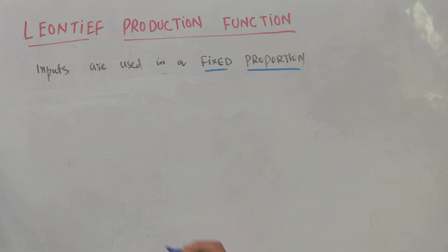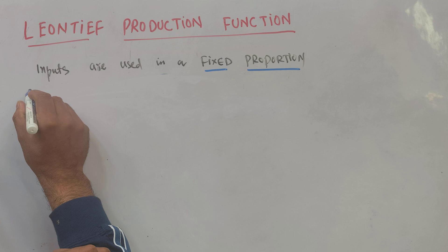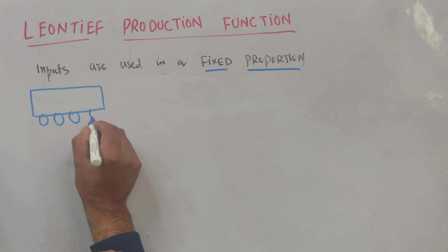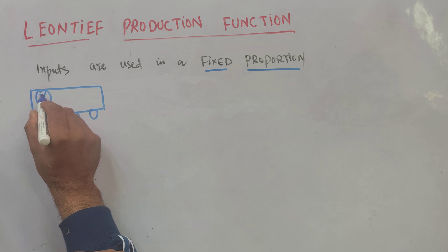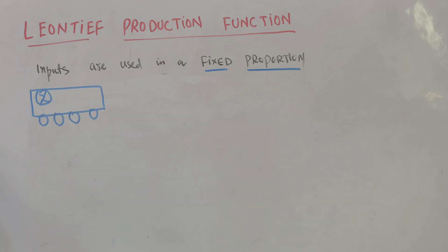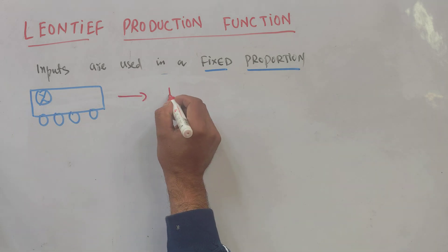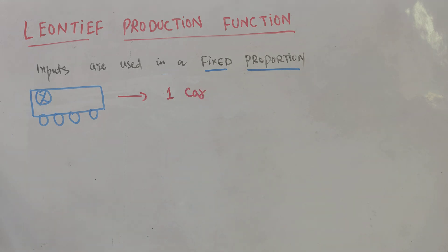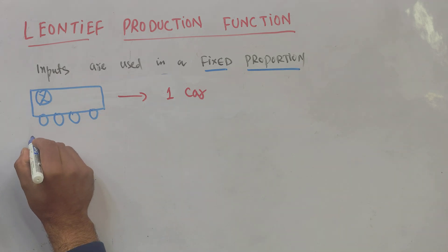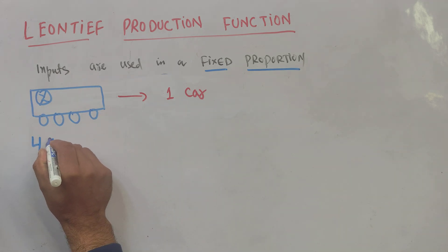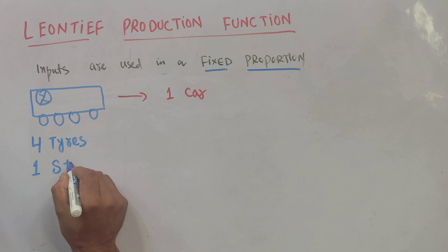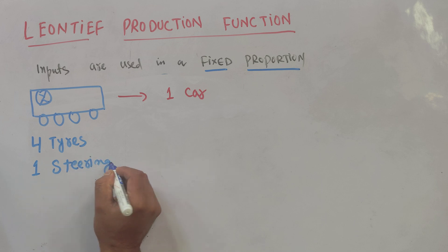Let me give an example. Let us say we are supposed to produce a car, which uses four tires and one steering wheel. For simplicity, we need exactly four tires and one steering wheel to produce one car.